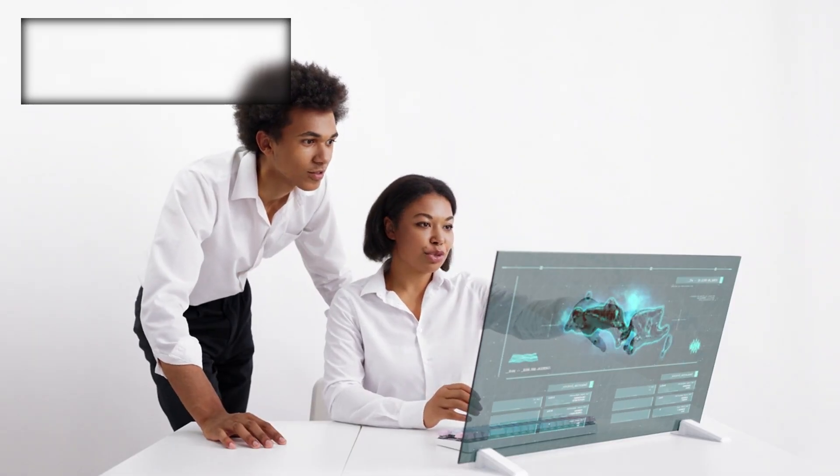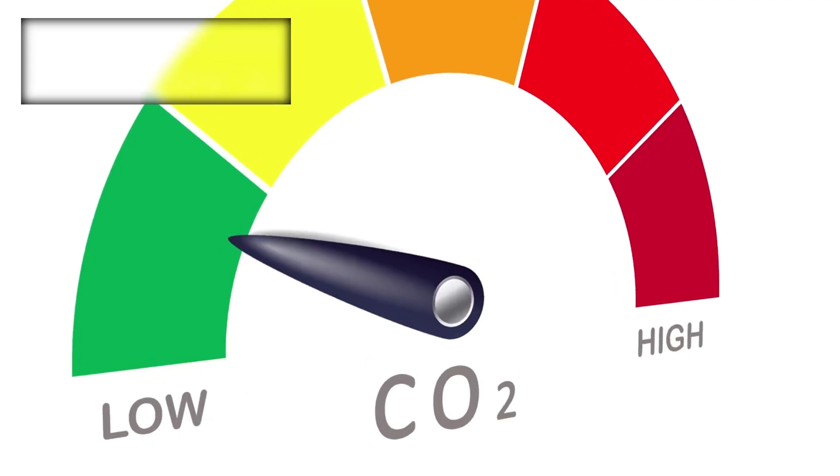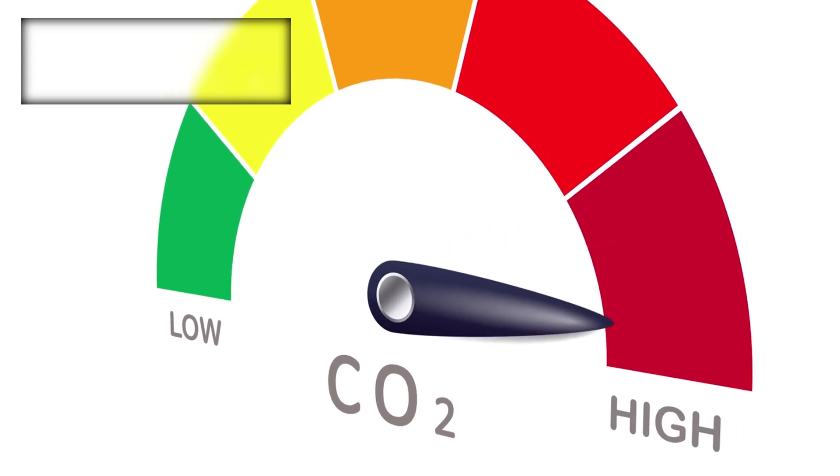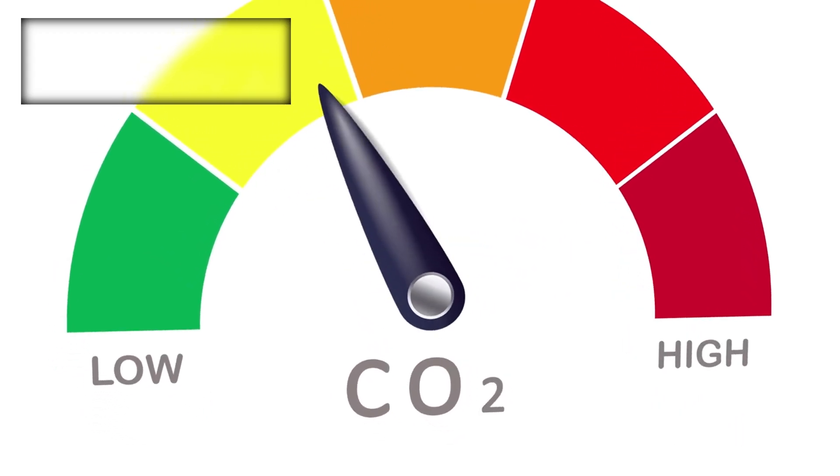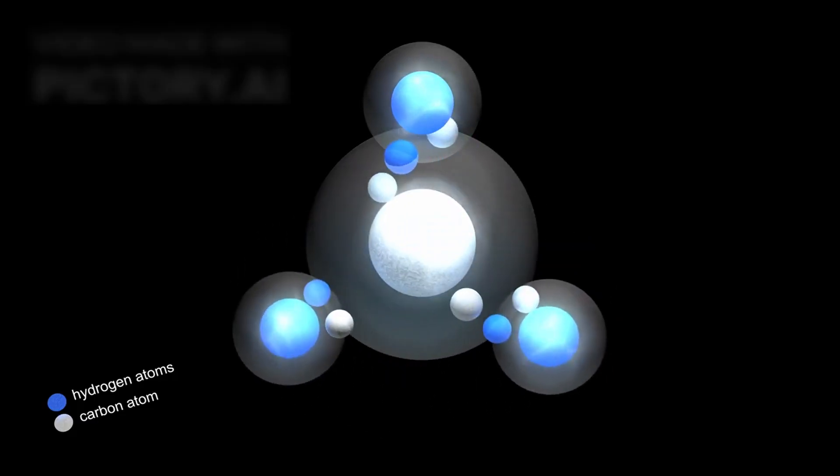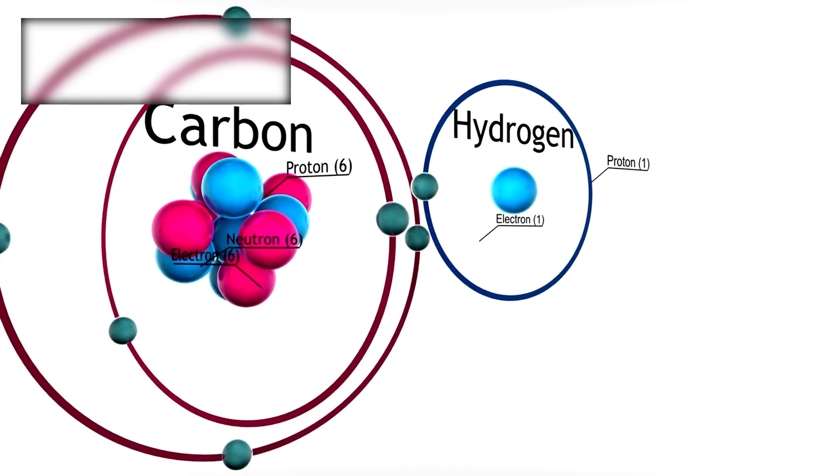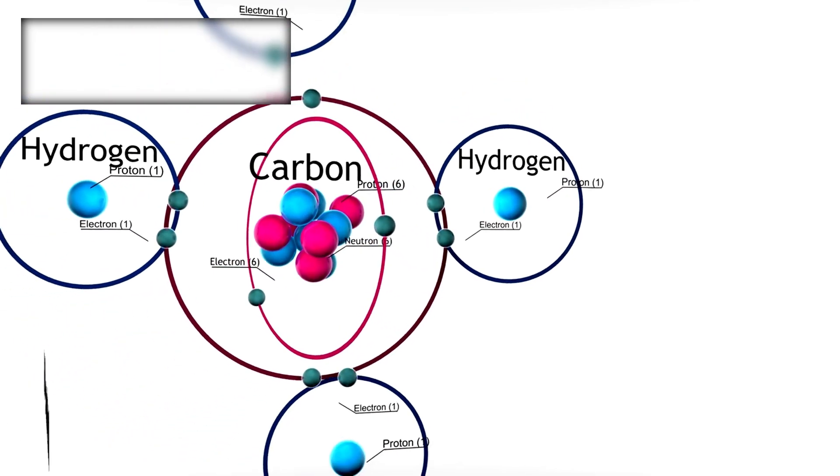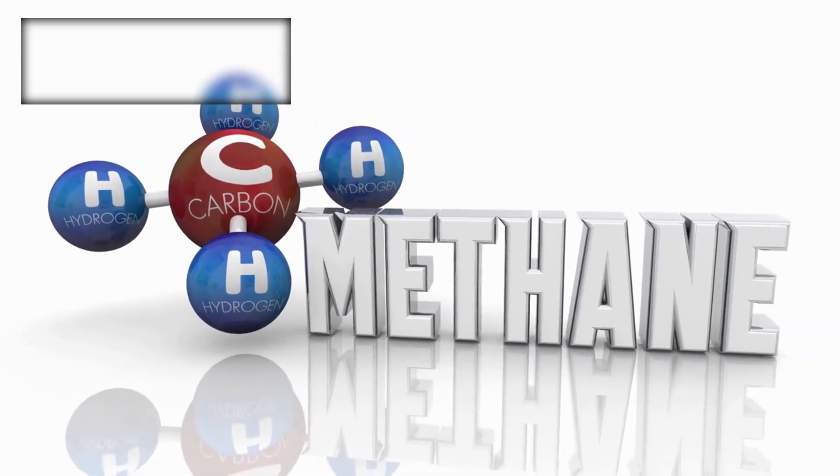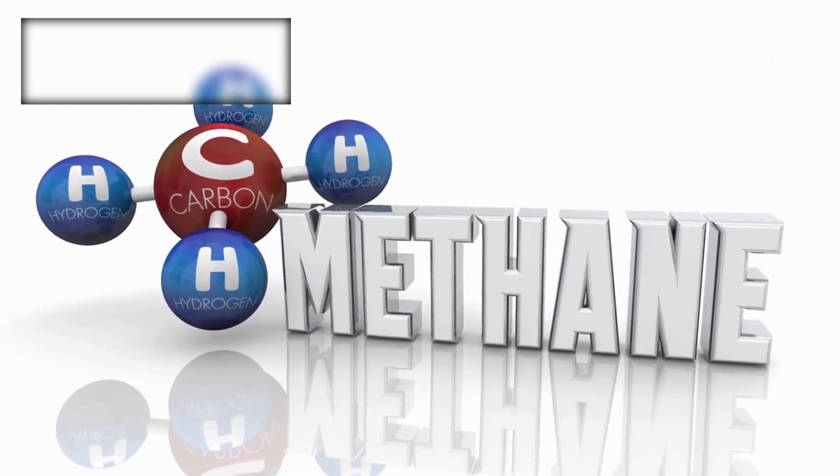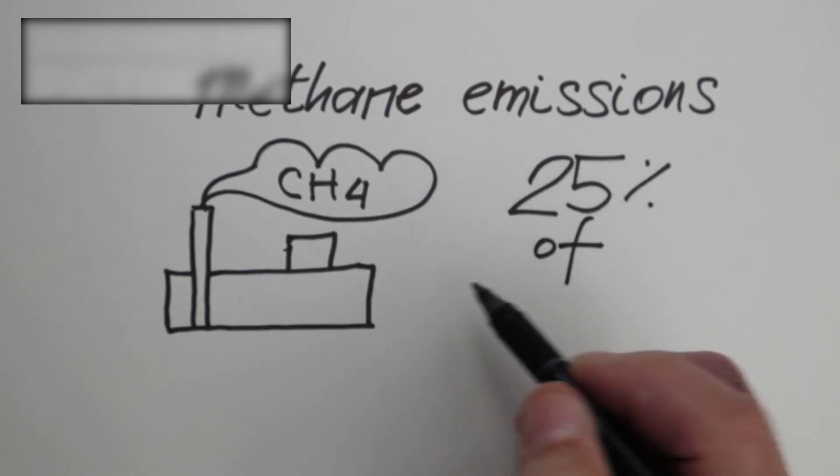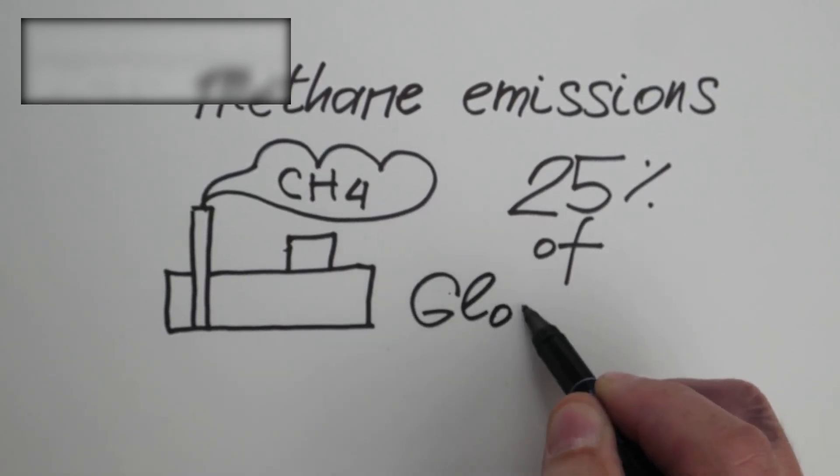The excitement grew with further discoveries. The telescope revealed the presence of methane and carbon dioxide, two molecules that are important both chemically and biologically. Methane, in particular, is intriguing. On Earth, it can be produced through geological processes, but much of it comes from biological activity. Even more interesting is that methane is unstable under stellar radiation, it breaks down quickly. That means if methane is abundant in K2-18b's atmosphere, something must be replenishing it.